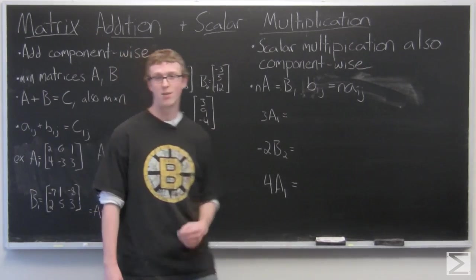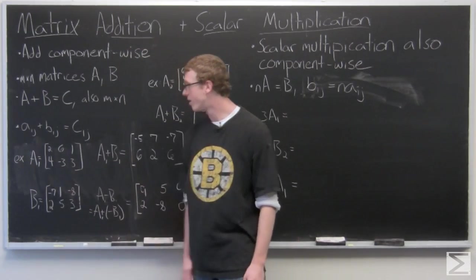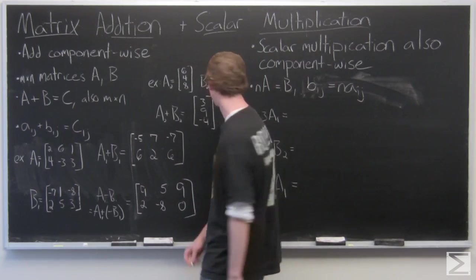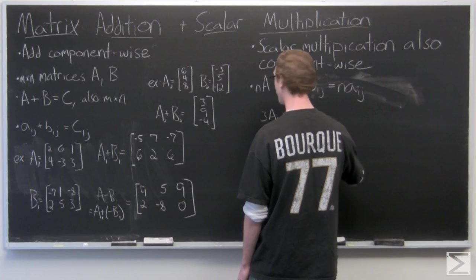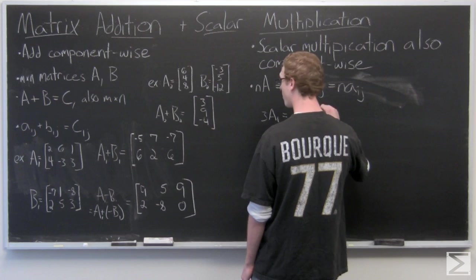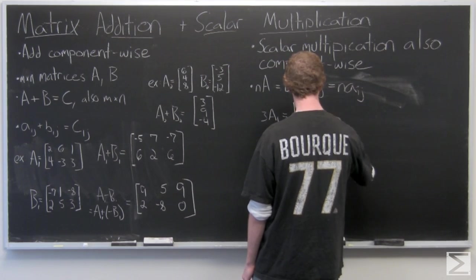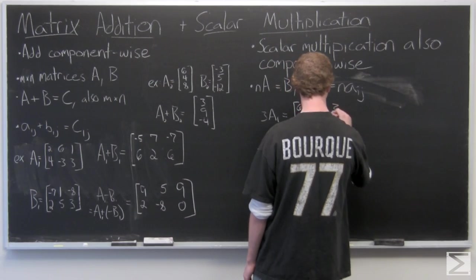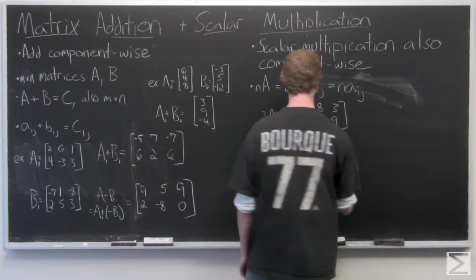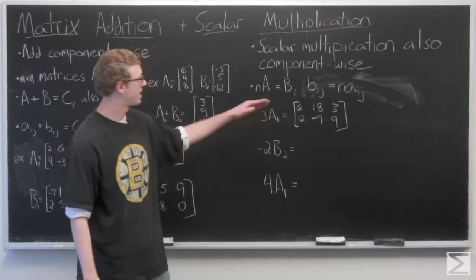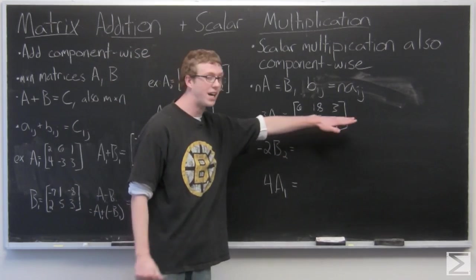So we'll just take a look at some examples. It's easiest to demonstrate scalar multiplication through that. So we have three times A1. Remember A1 over here. All you do is multiply each component by three. So the resultant matrix is also a two by three matrix: 6, 18, 3, 12, negative 9, 9.